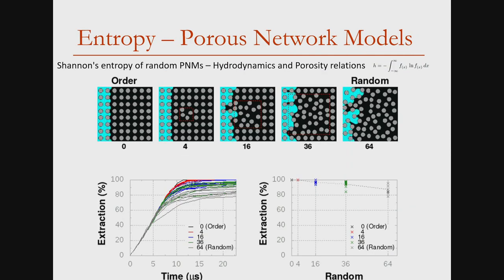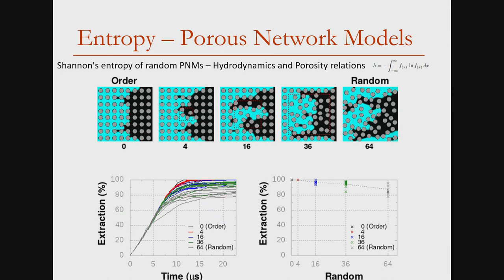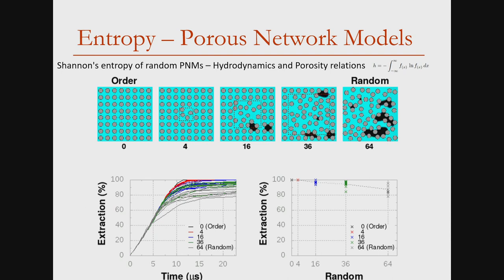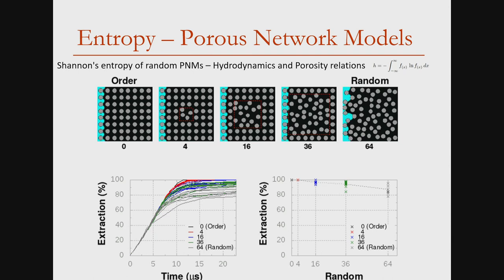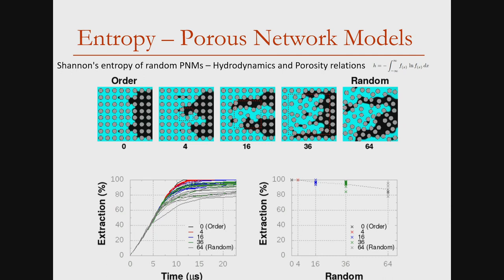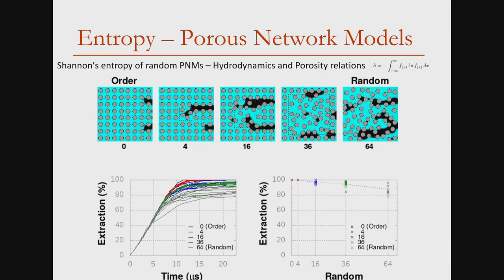You can learn how permeability changes with respect to geometry and how fluid flow behaves for those systems. Using Shannon entropy, you can create models with different entropy and find a correlation between hydrodynamics and porosity. This information can be directly plugged into a reservoir simulator dealing with cells on the scale of meters or kilometers, to see how much oil can be displaced over time. This tells us about the effect of randomness and disorder in the system.